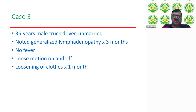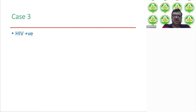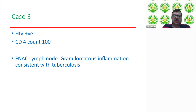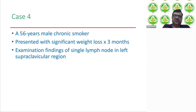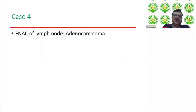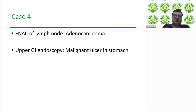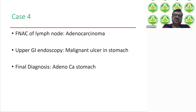Case three — the male truck driver who was unmarried, with generalized lymphadenopathy — as expected, HIV test was positive and CD4 count was only 100. However, when FNAC was done, it showed granulomatous inflammation consistent with tuberculosis. So this patient has AIDS and disseminated tuberculosis. Case four — a 56-year-old male chronic smoker with significant weight loss and a single left supraclavicular lymph node — FNAC showed adenocarcinoma. Upper GI endoscopy showed a malignant ulcer in the stomach. Final diagnosis was adenocarcinoma of the stomach.